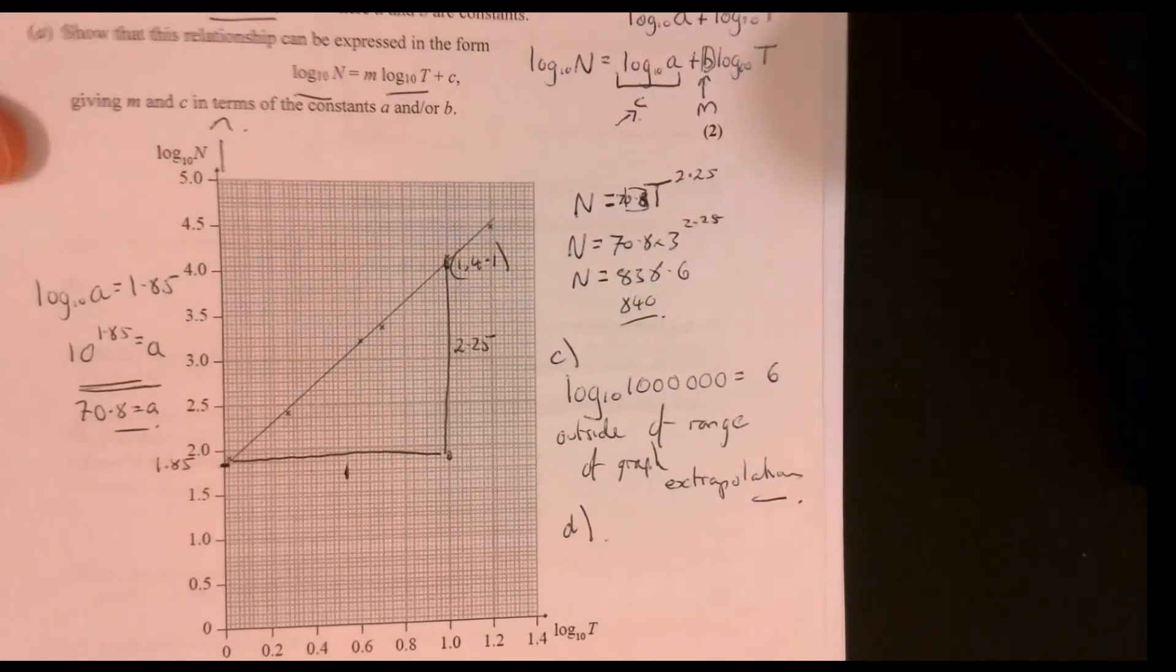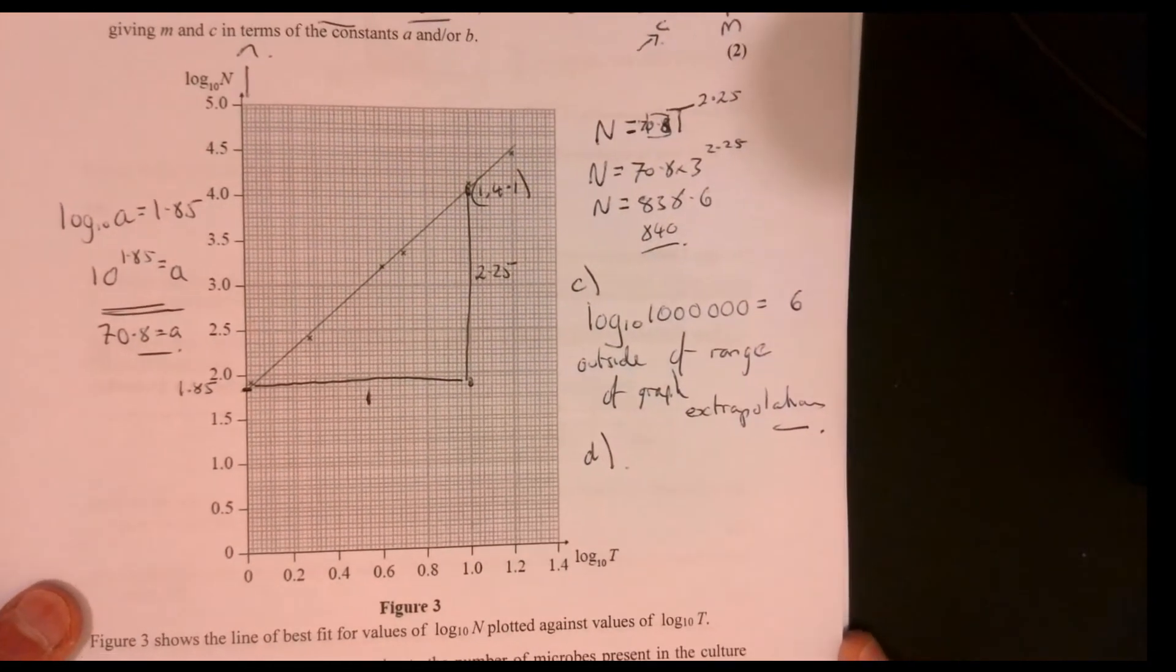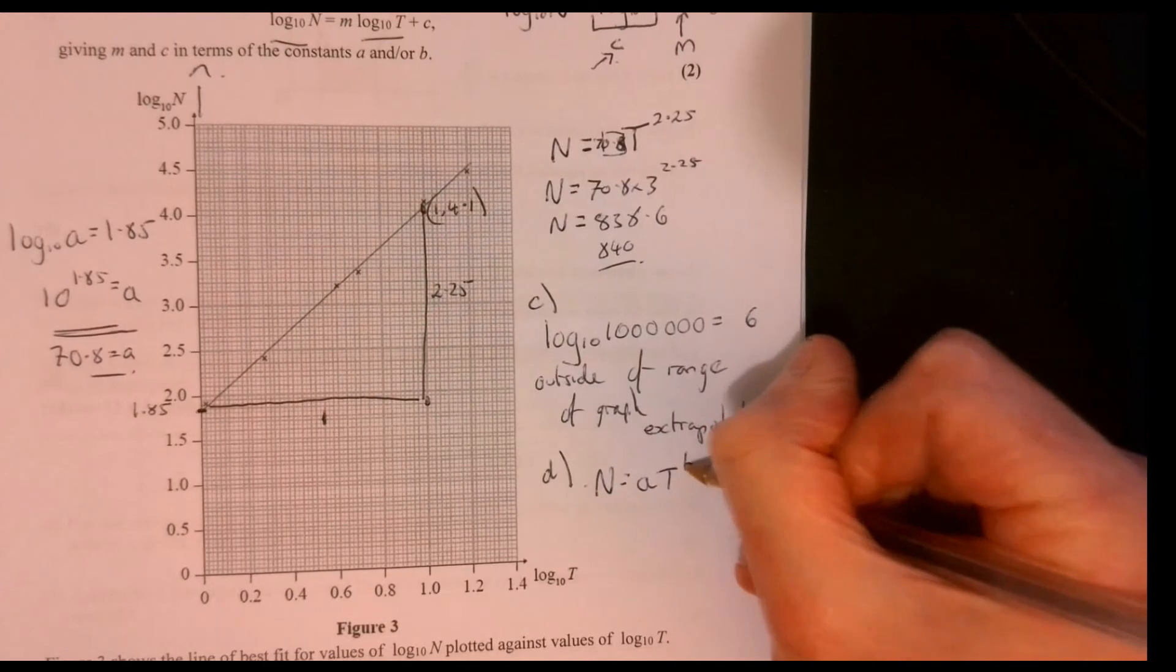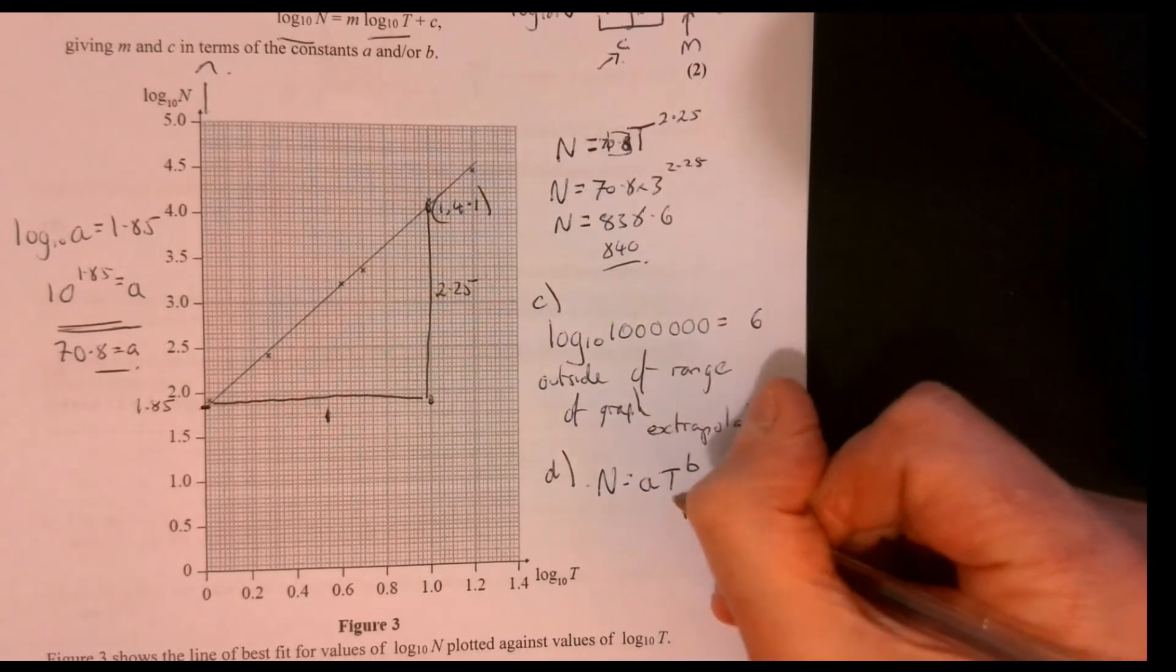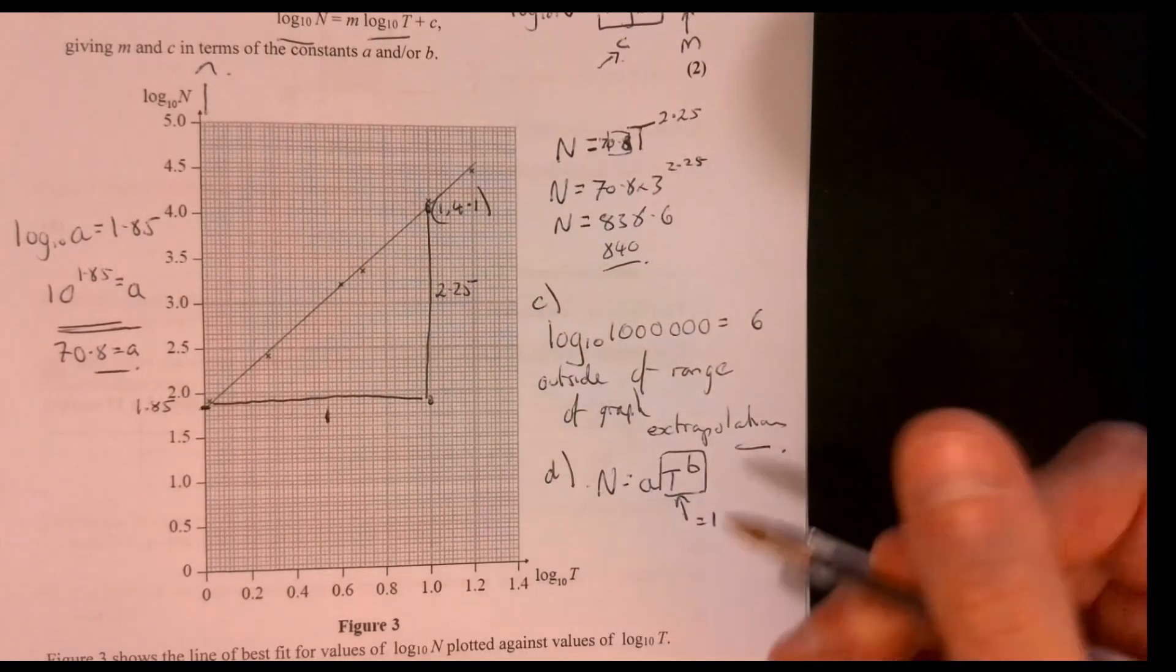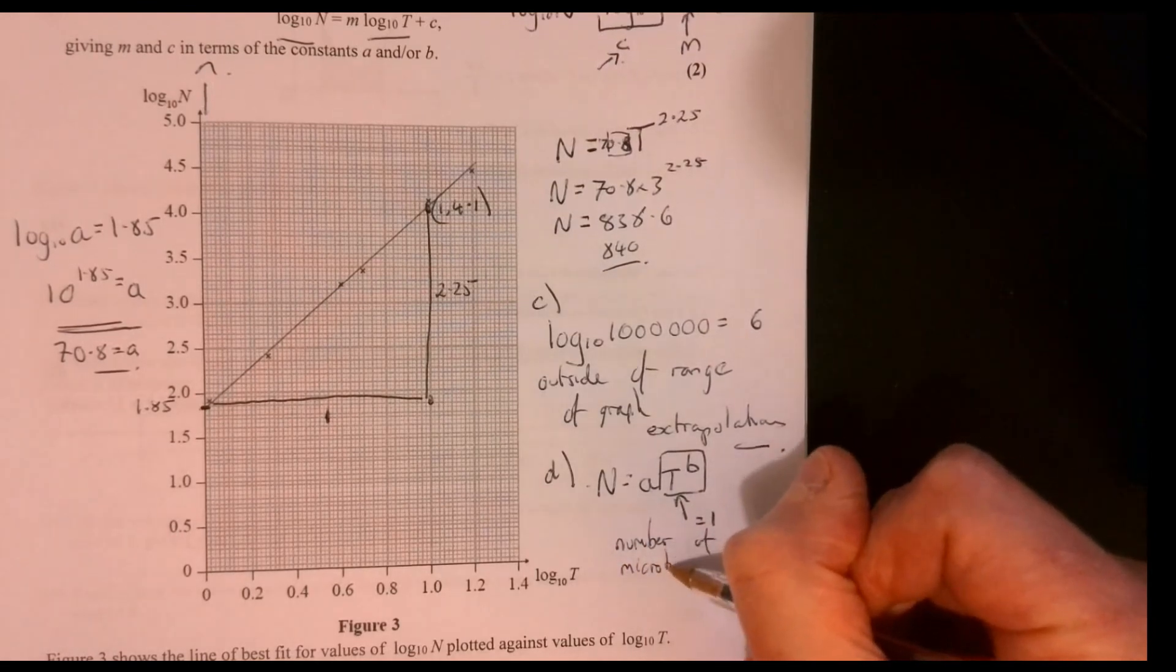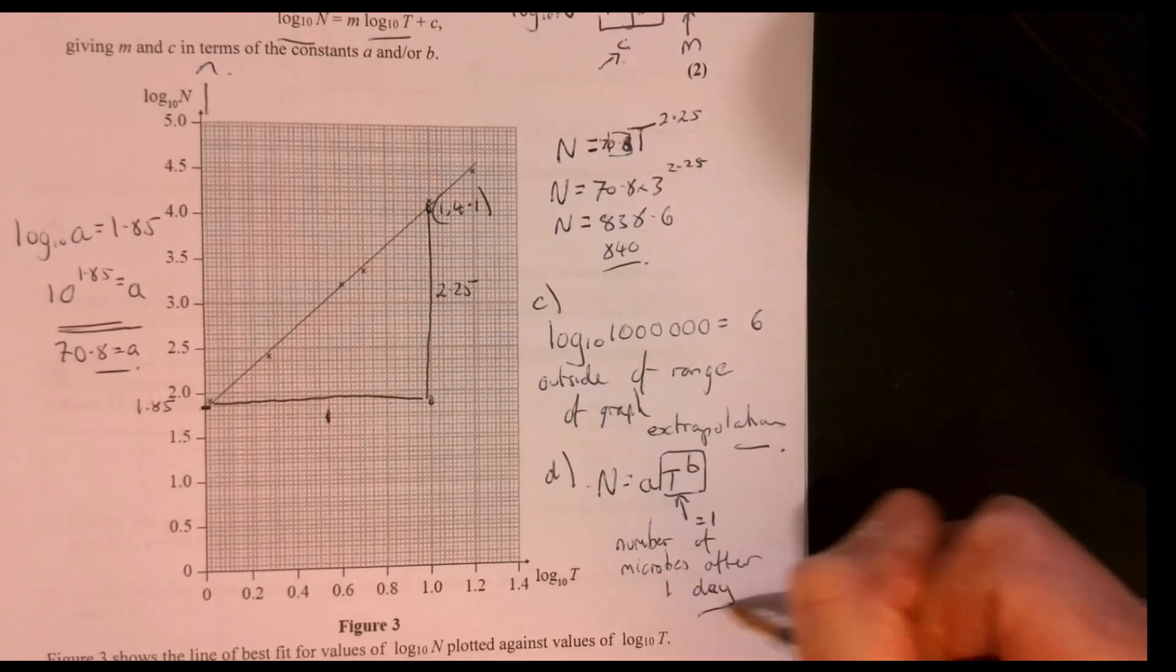There is a part D of the question. It says, with reference to the model, interpret the value of the constant A. Let's write this down. Think about when T is 1. Think about when that bit is equal to 1, in other words, one day. That whole thing would be equal to 1. So A would be equal to N. A is the number of microbes after one day.